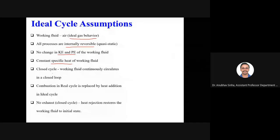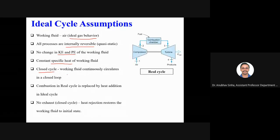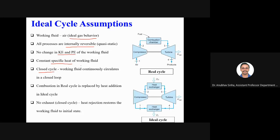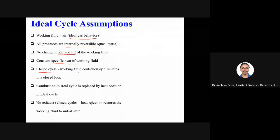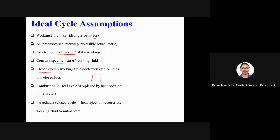We also assume constant specific heat, which is not a very accurate assumption but we will use it. The working fluid continuously circulates around a closed loop. The same mass of air is kept throughout the cycle — it is not moving in or out. This is different from a real engine where the working fluid enters and exits the system.